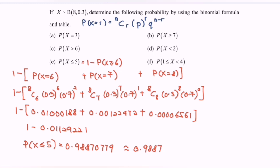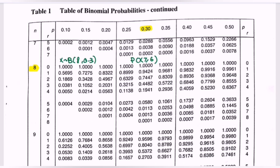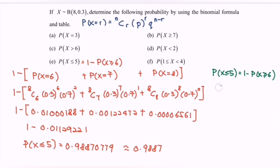Using the table for question e: P(X≤5) = 1 − P(X≥6). Referring to the binomial distribution table with n=8 and p=0.3, and looking up r=6, we find P(X≥6) = 0.0113. Therefore, P(X≤5) = 1 − 0.0113 = 0.9887.